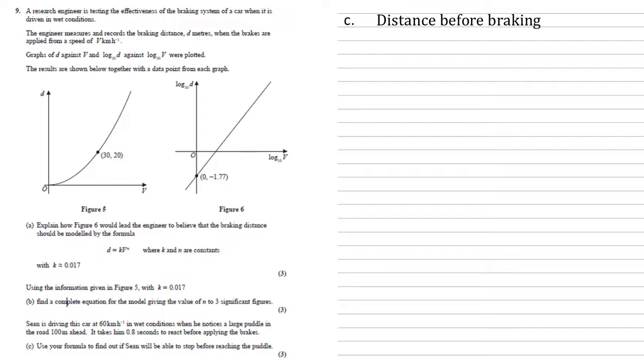We've got two distances: distance before braking and distance after braking. Distance before braking, Sean was traveling at 60 kilometers per hour for 0.8 seconds. Converting that into hours, that's 3600 seconds in an hour, so he's done 0.8 over 3600 of an hour times by 60 for the speed, meaning he will have traveled 0.01 three recurring kilometers. Converting to meters by multiplying by a thousand gives us 13.3 recurring meters.